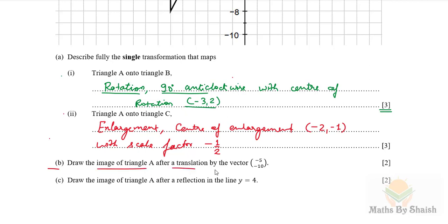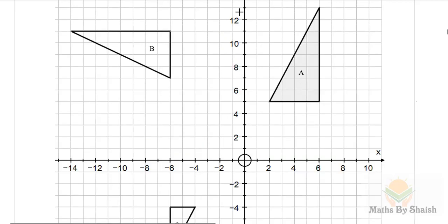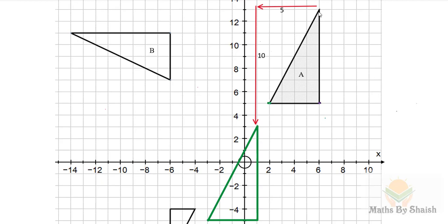Part B: draw the image of triangle A after a translation by the vector (−5, −10). The −5 means move 5 units to the left, and −10 means move 10 units downward. Applying this translation to each vertex of triangle A gives the new image position on the grid.